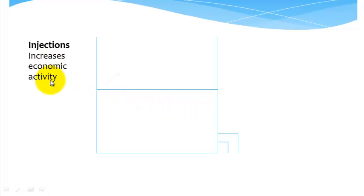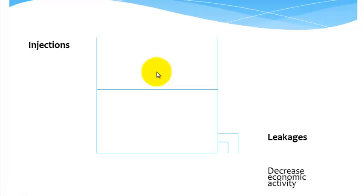And conversely, if there's more injections come into this tank, the economic activity, the level of water if you like, goes up. Now, if we look at leakages, they decrease economic activity as I told you earlier. Therefore, we have the tank going down via this tap.